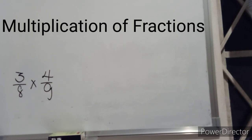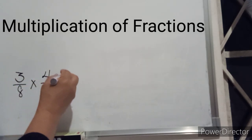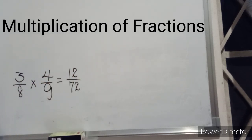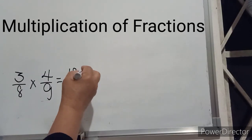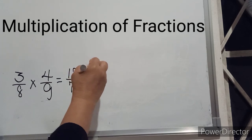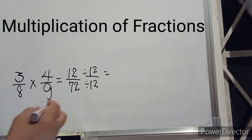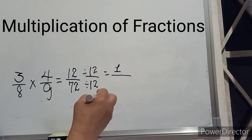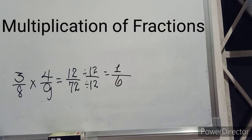Example number two: three over eight times four over nine. Following what we did in example number one, we multiply the numerators together and the denominators together. This gives us twelve over seventy-two. Now twelve and seventy-two are both divisible by twelve, so we divide both numerator and denominator by twelve. Twelve divided by twelve is equal to one, and seventy-two divided by twelve is equal to six. So the answer is one over six.